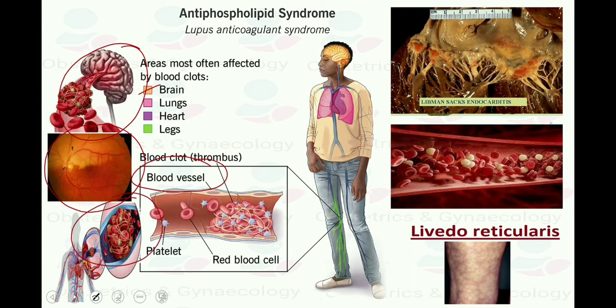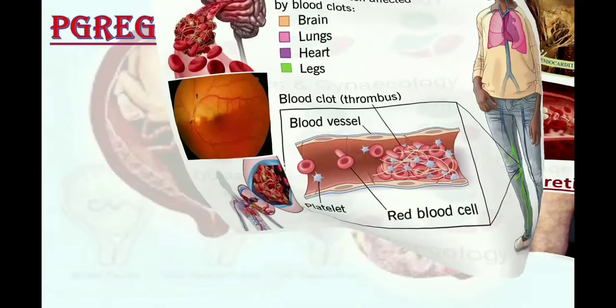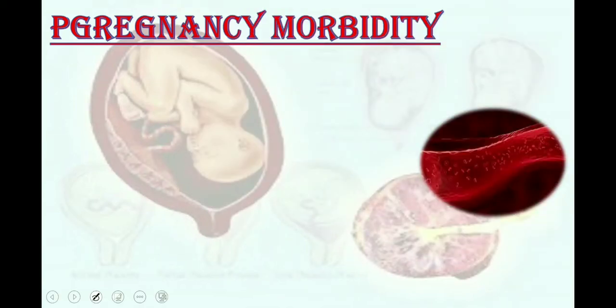The patient might give history of pulmonary embolism, pulmonary hypertension, or DVT. At the cardiac level, there might be history of Libman-Sacks valvulopathy, MI, and diastolic dysfunction. There might be hemolytic anemia, hematologic thrombocytopenia, or livedo reticularis. All these indicate ongoing thrombosis in any part of the body. As a gynecologist, you specifically need to establish whether there is any placental morbidity.